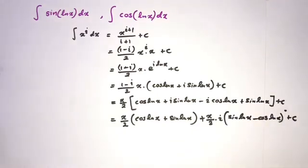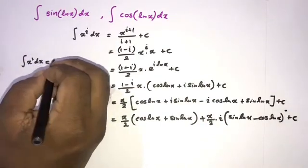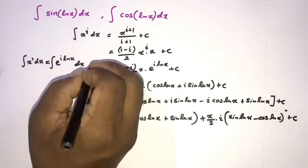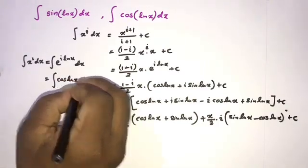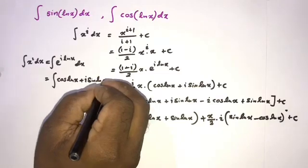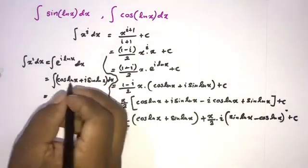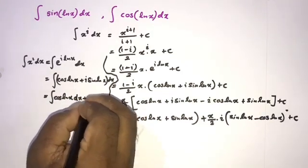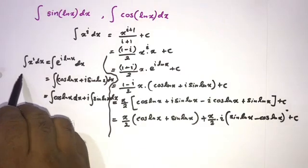Now we take this integral again. We can write ∫x^i dx also as ∫e^(i·ln x) dx. Since e^(i·ln x) equals cosine of natural log of x plus i times sine of natural log of x, this becomes the integral of cosine of natural log of x dx plus i times the integral of sine of natural log of x dx.